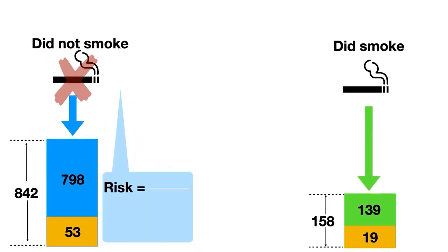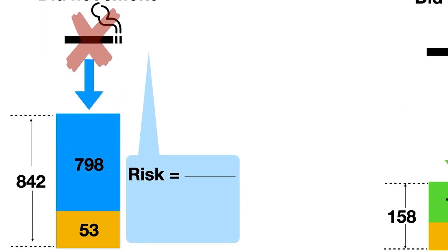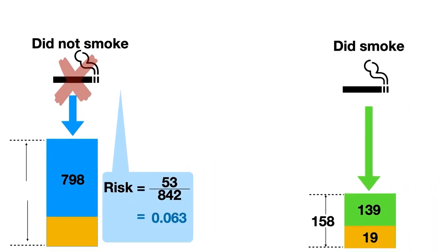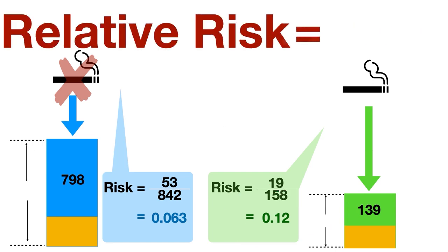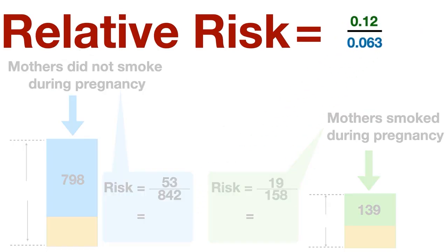Now, to calculate the risk, we consider the number that had a particular outcome divided by everybody in that group. So the risk of low birth weight babies amongst non-smokers was 0.063, that's about 6%. And similarly, the risk of low birth weight babies amongst smokers was 0.12, about 12%. To calculate the relative risk, we take the risk in the exposed group and we divide it by the risk in the unexposed group. So that's 0.12, 12%, divided by 0.063, 6%. And we get a relative risk of 1.9. That's nearly two. In other words, smoking during pregnancy nearly doubles your risk of having a low birth weight baby.